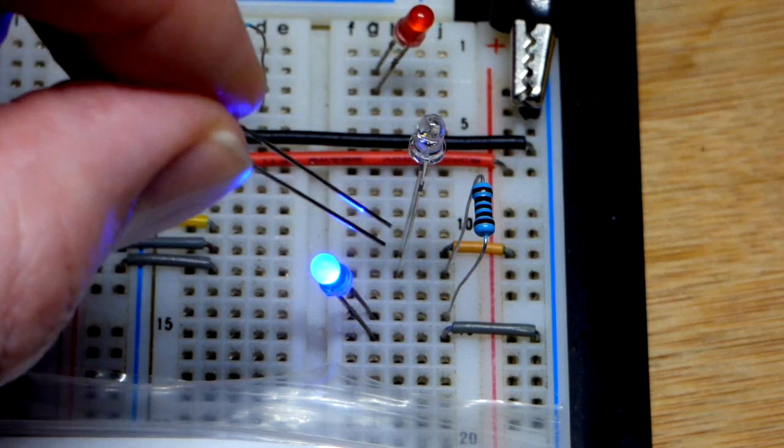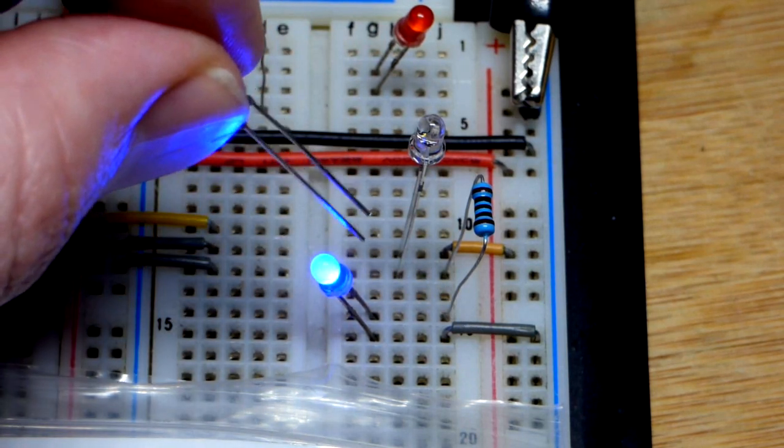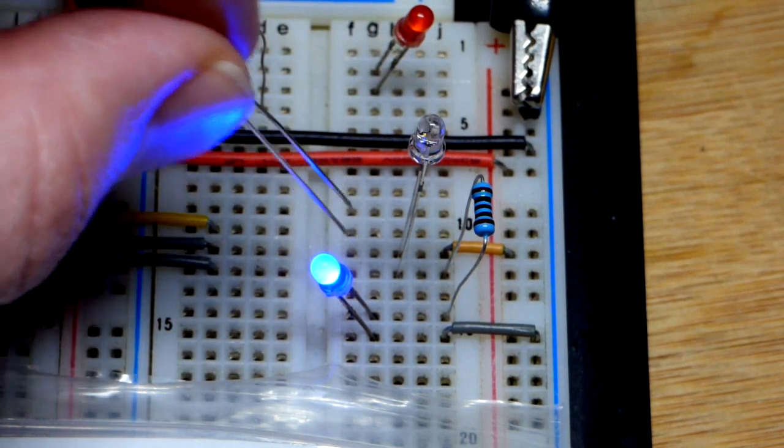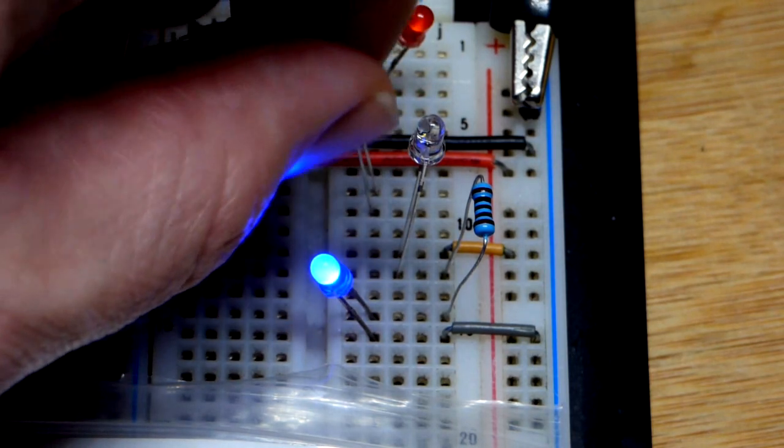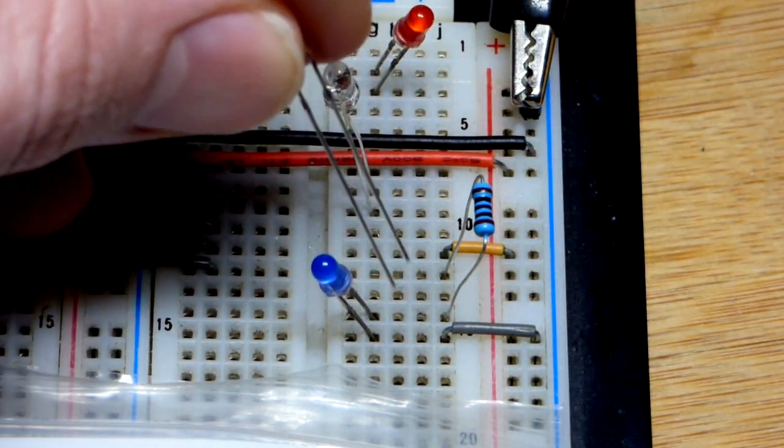The long lead the anode though is towards the more negative side. The short lead the cathode more positive side. The photodiodes are reverse biased, both of them right there.